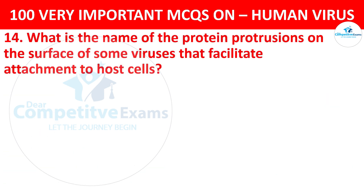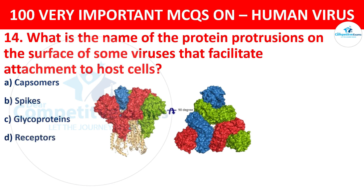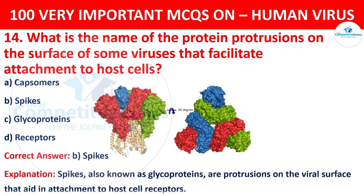Question 14. What is the name of the protein projections on the surface of some viruses that facilitate attachment to host cells? Your options are capsomers, spikes, glycoproteins, or receptors. The correct answer is B, that is spikes. Spikes, also known as glycoproteins, are protein projections on the viral surface that aid in attachment to host cell receptors.